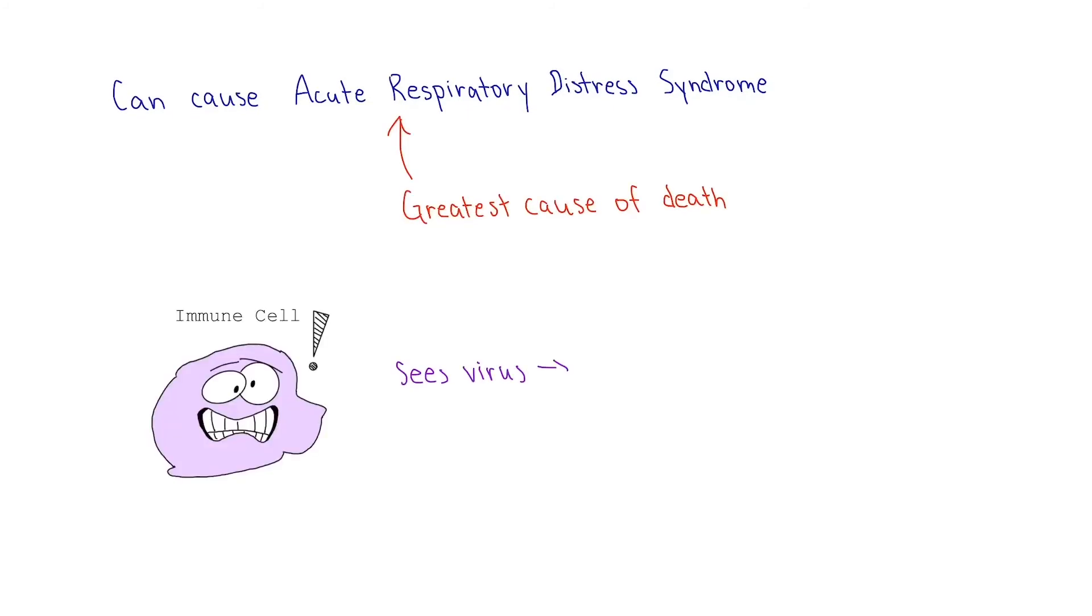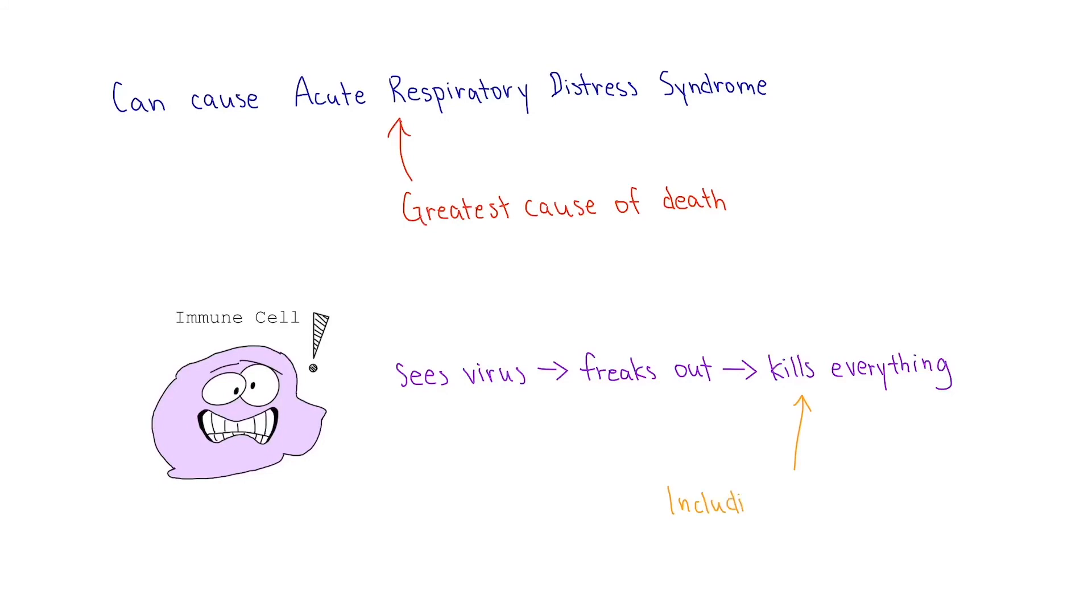Very rarely, it can lead to acute respiratory distress syndrome, which is the greatest cause of death for this virus. Basically, your immune system sees the virus, freaks out and goes haywire, and accidentally kills the sacs in your lungs designated for gas exchange, called alveoli, in the process of killing the pathogen.